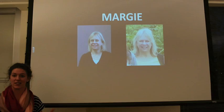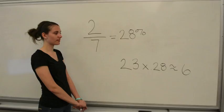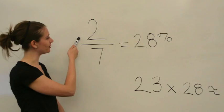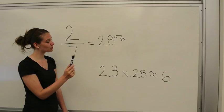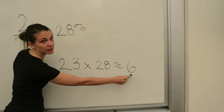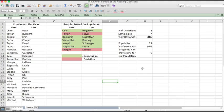We found two people in our sample group that were part of the deviation. Our sample group was seven, which is 28%. So 28% projected onto our population of 23 means that six people are part of the deviation. It's important to note that our projected number of deviations of six may be different from the actual number of deviations if we evaluated the whole class. This is known as sampling risk.